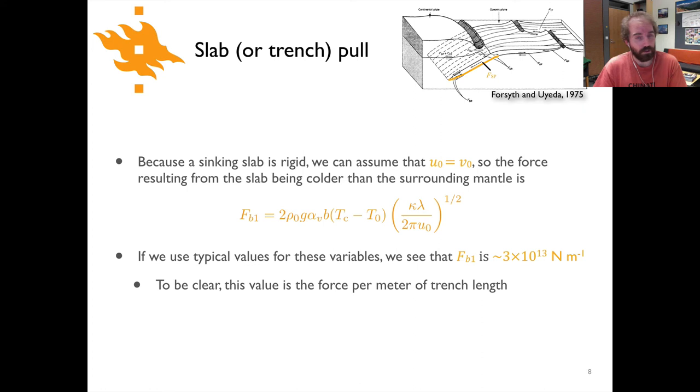Now if we also assume the sinking slab is rigid, which is a reasonable assumption, we can say that U₀ is equal to V₀, and by doing that the relationship again gets a little bit simpler. And we can calculate the force that results from the slab being colder than the surrounding mantle as being something of an easier combination of terms than what we saw before. We still have this reference density ρ₀, g, coefficient of volumetric expansion, thickness of the fluid, the temperature at the center of the convection cell minus the temperature at the top of the fluid at the lithosphere-asthenosphere boundary, and then diffusivity, the two times the width of the convection cell divided by 2π times the horizontal velocity. So here you can see all we need to know is the horizontal velocity, which is actually something we can calculate based on the plate motions or at least estimate based on the plate motions. And so the relationship then obviously is a little bit simpler.